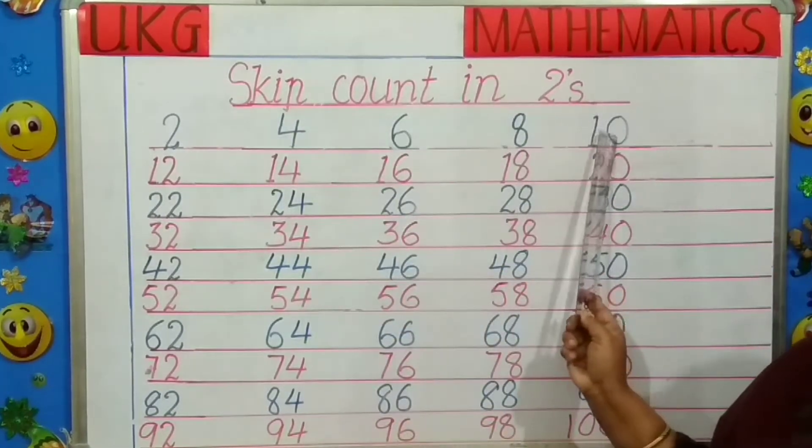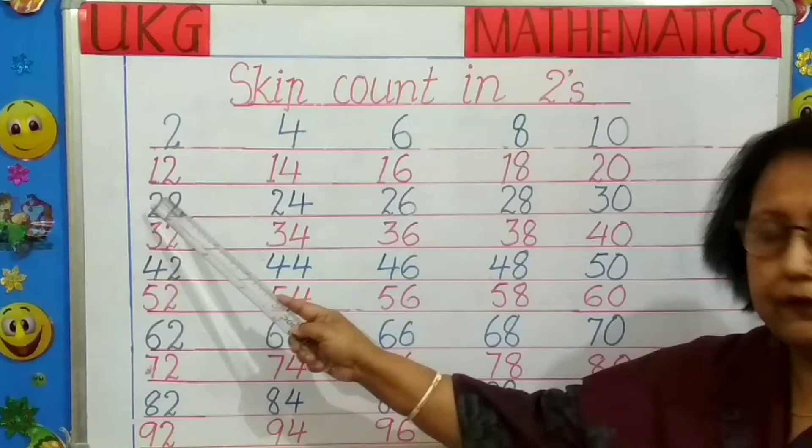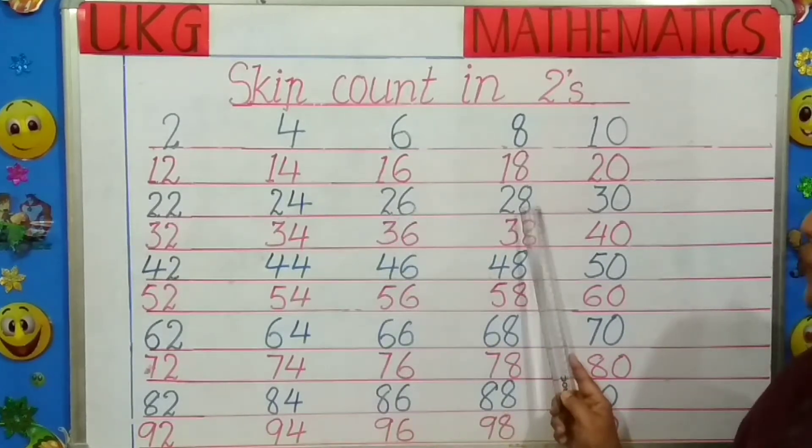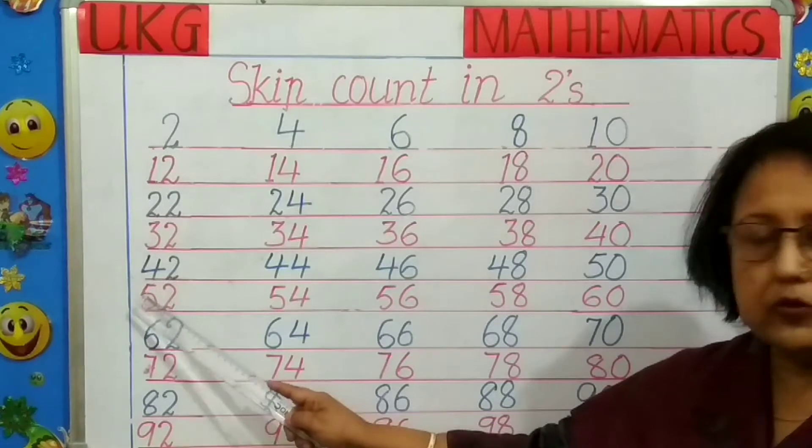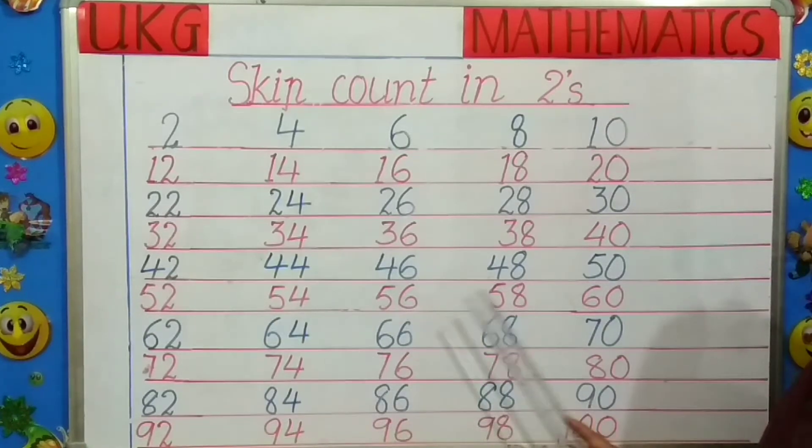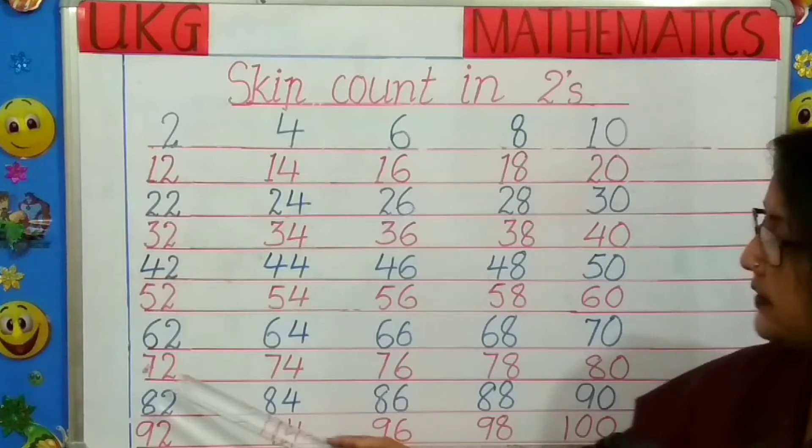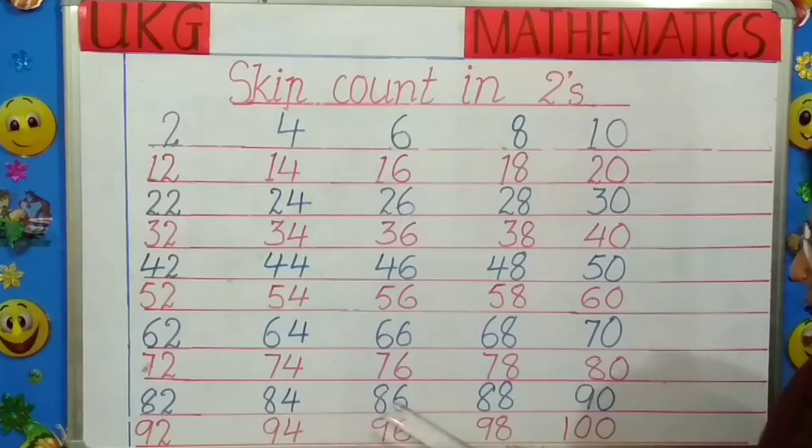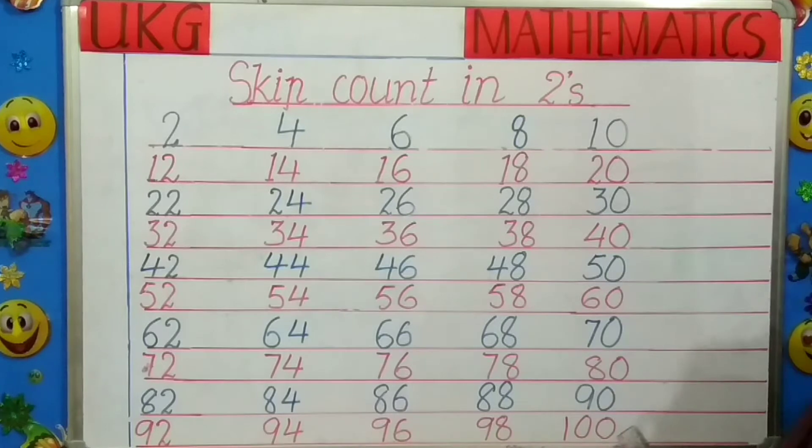Skip count in twos: 2, 4, 6, 8, 10, 12, 14, 16, 18, 20, 22, 24, 26, 28, 30, 32, 34, 36, 38, 40, 42, 44, 46, 48, 50, 52, 54, 56, 58, 60, 62, 64, 66, 68, 70, 72, 74, 76, 78, 80, 82, 84, 86, 88, 90, 92, 94, 96, 98, 100.